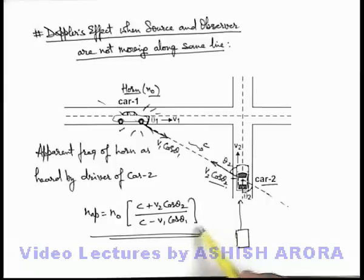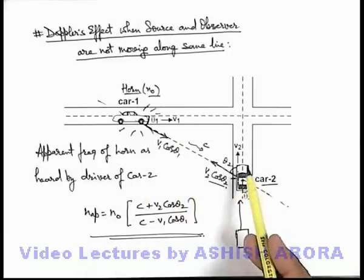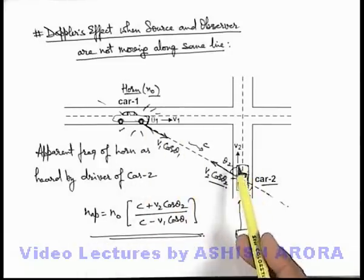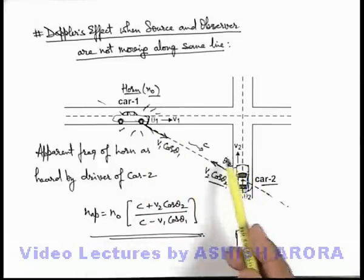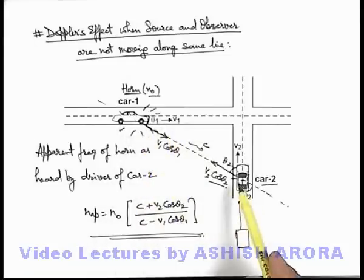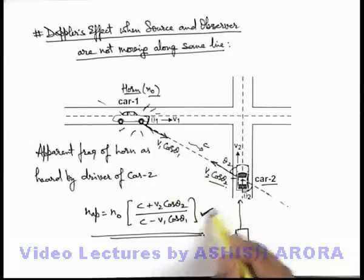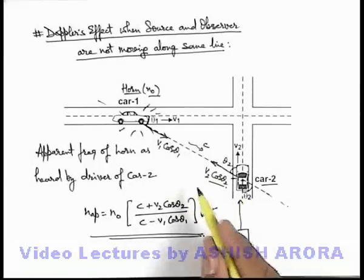In such a way we can analyze all situations when source and observer are not moving in the same line. We just need to take the velocity components of the source as well as the observer along the line of sight, and we can apply the relation of Doppler's effect to handle such situations.